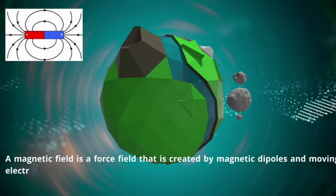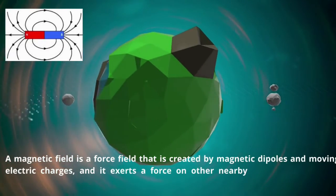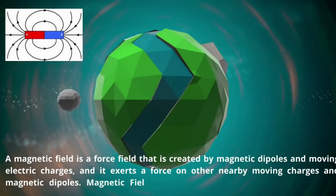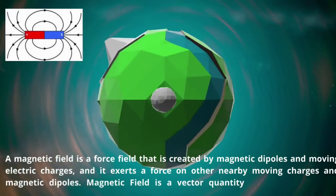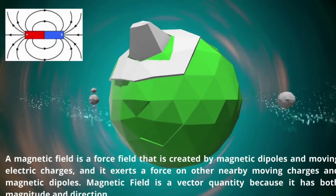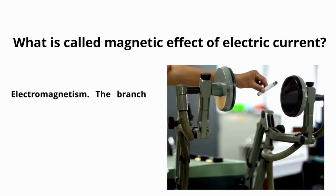A magnetic field is a force field that is created by magnetic dipoles and moving electric charges, and it exerts a force on other nearby moving charges and magnetic dipoles. Magnetic field is a vector quantity because it has both magnitude and directions.